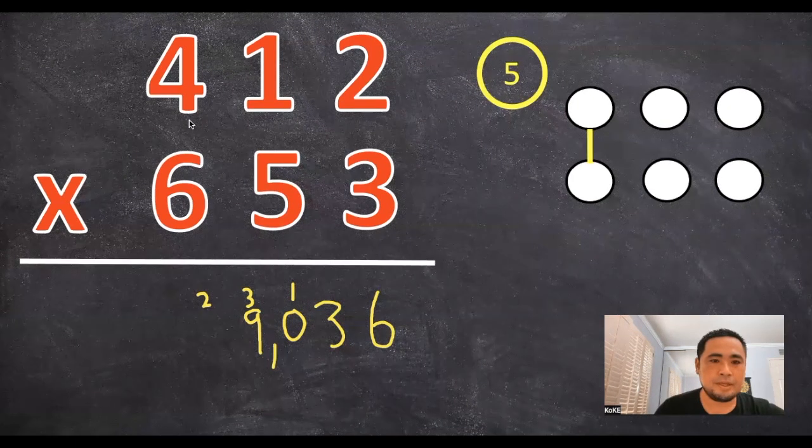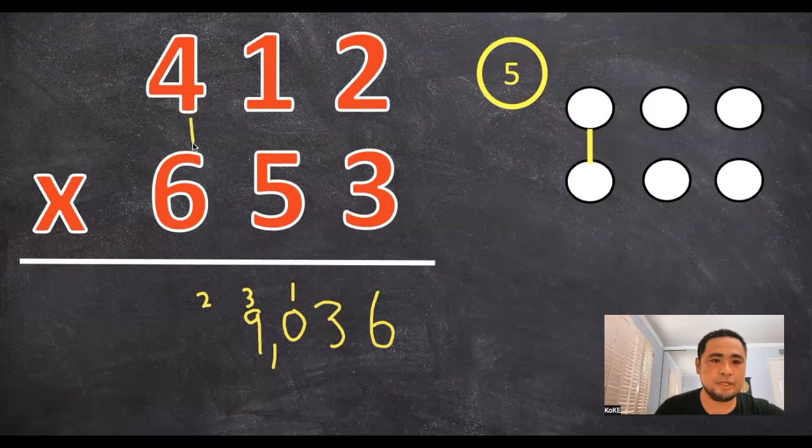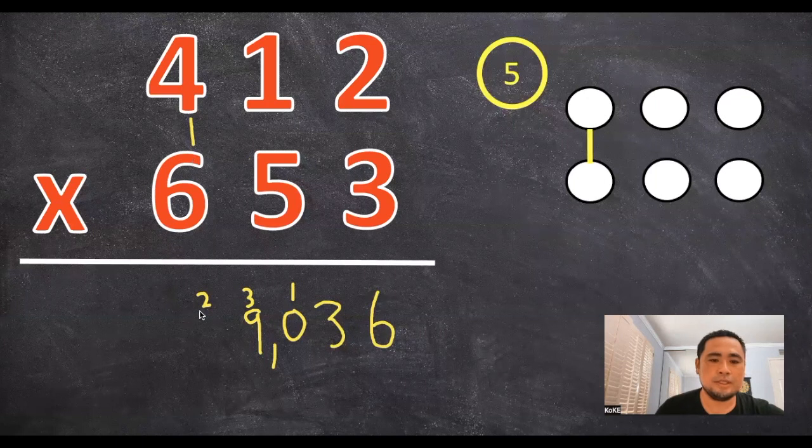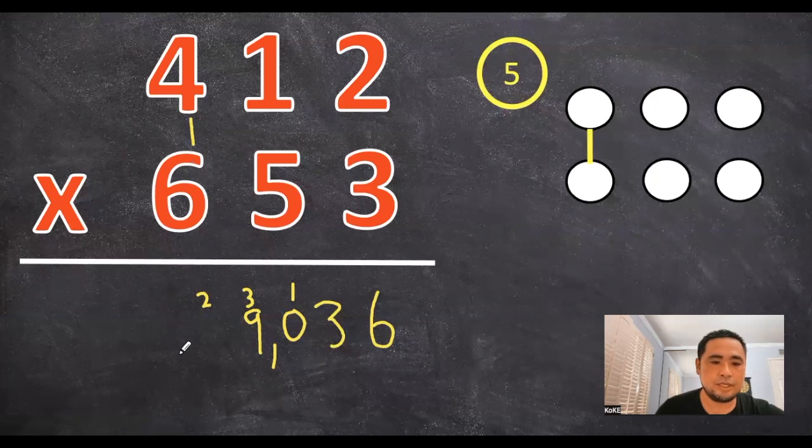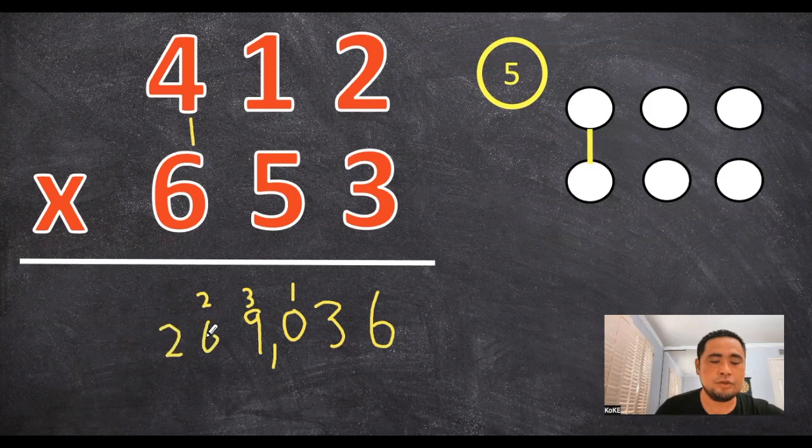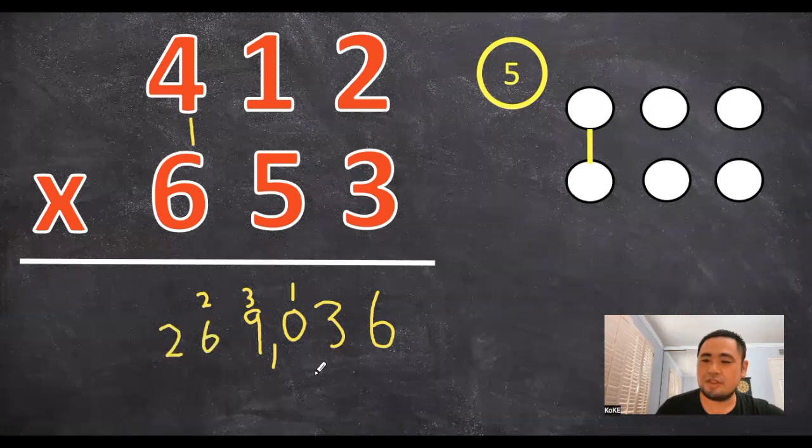Now the final step is multiplying these two numbers together, so 4 times 6 is 24, plus the 2 gives us a 26, for an answer of 269,036.